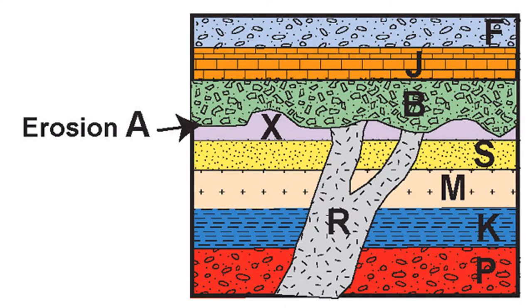Erosional surfaces are generally illustrated in geologic sections as wavy, irregular, undulating lines. Often enough, you will see abrupt changes in lithology across lines of erosion, as well as the termination of fault lines and intrusive rocks.